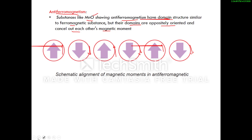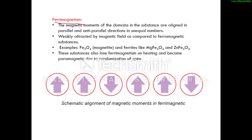The last type is ferrimagnetic substances. In these, the magnetic moments of domains are aligned in parallel and anti-parallel directions but in unequal numbers. These are weakly attracted by a magnetic field compared to ferromagnetic substances. Examples are Fe₃O₄ (magnetite) and ferrites like MgFe₂O₄ and ZnFe₂O₄. These substances also lose their ferrimagnetism on heating — a common board exam question. When Fe₃O₄ is heated, it becomes paramagnetic due to randomization of spins.